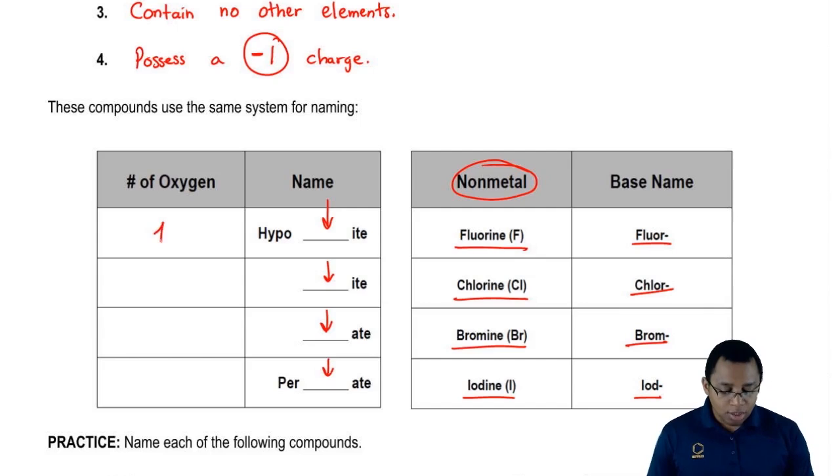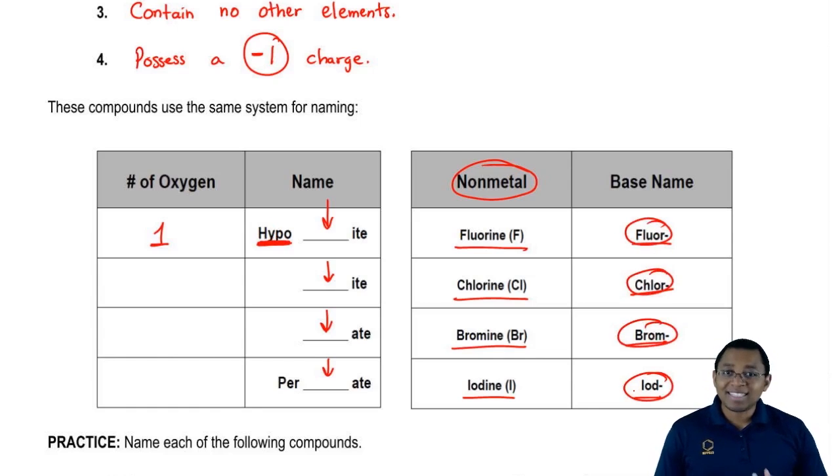We're going to say when we have one oxygen present, the prefix will be hypo. The beginning of the name will be hypo. Based on the halogen present, it could have any one of these four base names. The ending, the suffix, will be '-ite'.